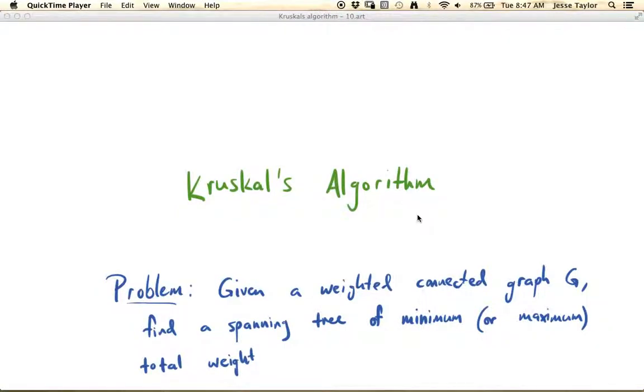This video is going to talk about Kruskal's algorithm. So what is Kruskal's algorithm? Kruskal is a mathematician, and his algorithm solves the problem: if you're given a weighted connected graph, you want to find a spanning tree of minimum or maximum total weight.